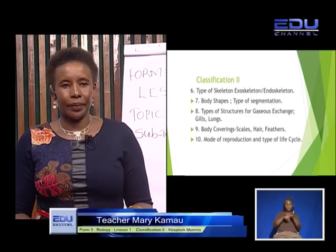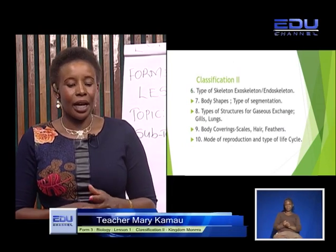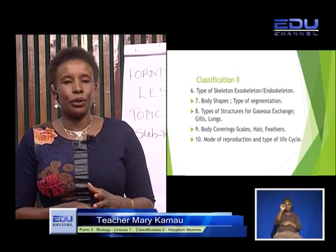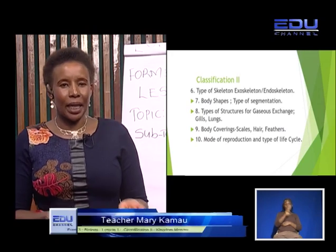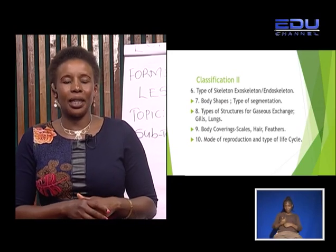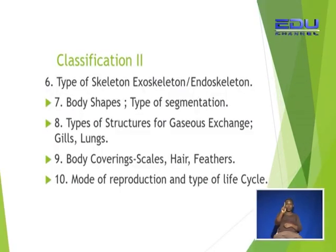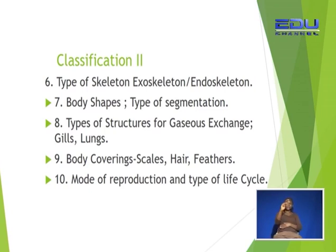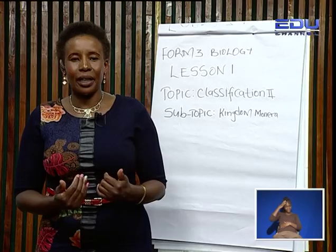Appendages include limbs and legs. Others have different types of skeletons which can be used to classify organisms. For example, we have ourselves who have endoskeletons. Organisms such as locusts have exoskeletons, which can also be used to classify them. Body shape is another feature — some organisms are segmented. Some have more than one segment, others have three segments, and others have very many segments. For example, a grasshopper has three segments: the head, the thorax, and the abdomen.